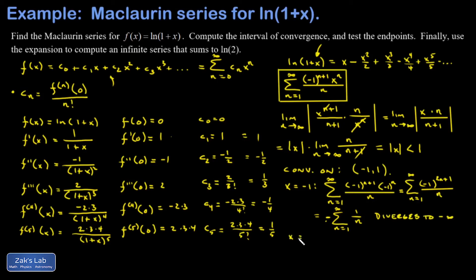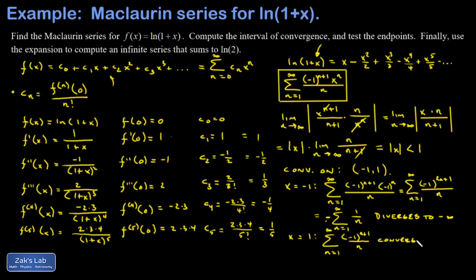When I plug in x equals positive 1, I get the sum from n equals 1 to infinity of negative 1 to the n plus 1 over n. This is just the alternating harmonic series, so I know it converges. We've proved that in the past using the alternating series test.